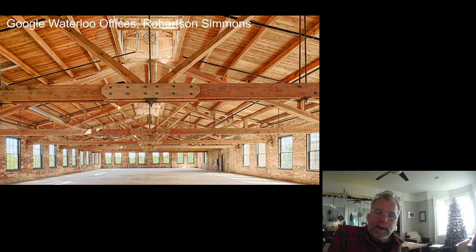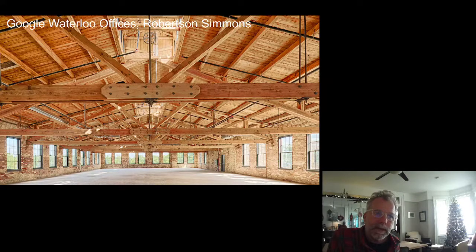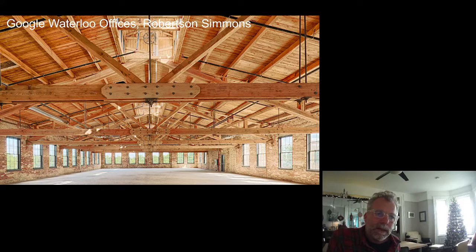Is mass timber new? No — I already showed you a picture of the building on Adelaide built in 1895, an eight-story heavy timber building. The Waterloo offices for Google by Robertson Simmons — an old mass timber factory. This I think was our first project using mass timber: the Grand River Recreation Centre with McLennan Architects, built in the early 80s. So we've been doing mass timber and heavy timber for a long time.